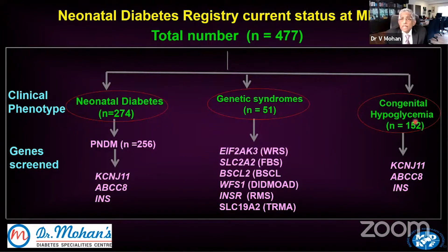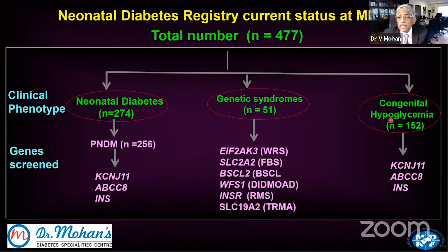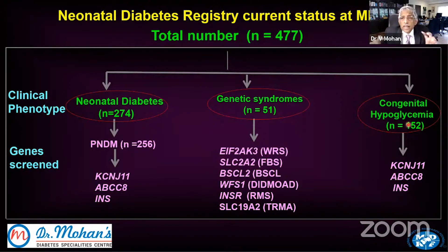We also have 152 cases of congenital hyperinsulinism — the opposite of neonatal diabetes. From birth these children have persistent hypoglycemia and don't respond to glucose. With genetic studies the same three genes appear: KCNJ11, ABCC8, and the insulin gene — one is a gain-of-function mutation causing hypoglycemia, the other a loss-of-function causing neonatal diabetes. Genetic testing tells you who will respond to diazoxide. We have a large series of about 50 cases in collaboration with AIIMS Delhi, soon to be published in the International Journal of Pediatrics. We are also doing proteomics and functional genomics work.